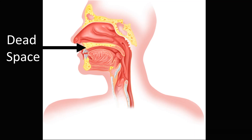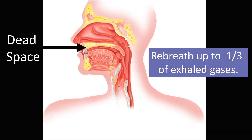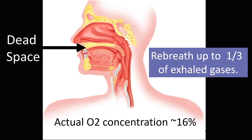Some of it is filling this dead space. This creates a rebreathing where we can have up to as much as one third of our exhaled gases. The patient exhales, we fill that area with exhaled gas, and then we re-inhale some of that exhaled gas — so up to a third of what we're inhaling could be what was just exhaled. When we look at the actual oxygen concentration getting down to the lung, we think of room air as being 21 percent, but the actual oxygen concentration getting into the lung might be more like around 16 percent, based on this rebreathing in the dead space of the nasal pharynx.